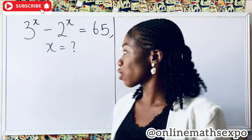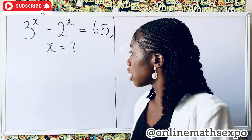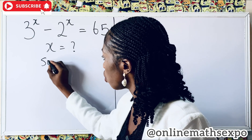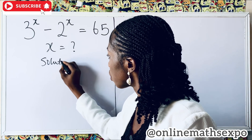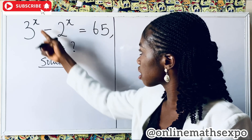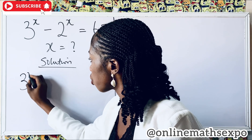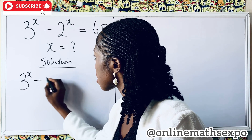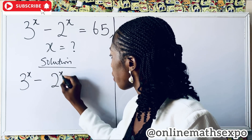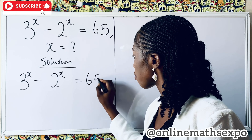Now let's see how best to answer this question. We are going to begin with the solution. Remember this is what we are given: 3 to the power of x minus 2 to the power of x is equal to 65.